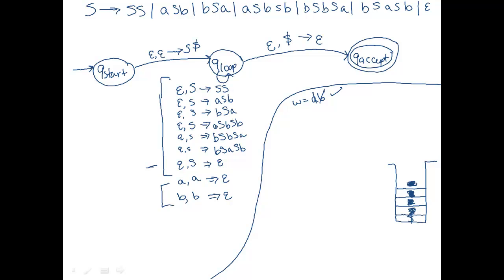So that's it. I recommend trying this with some of the more complicated strings that make you mix things around — like ABB, or BABAB — and step through it the way we did. In those cases, when you have S on top of the stack, instead of replacing with epsilon as we did for our simple string, you're going to have to choose another transition to use.